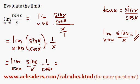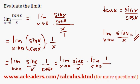I'm just going to rearrange this slightly and have sin x over x times 1 over cos. I can actually split this up into the limit as x approaches 0 for sin x over x times the limit as x approaches 0 of 1 over cos.